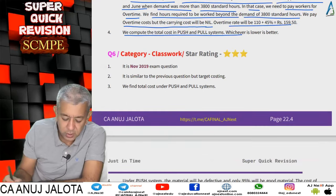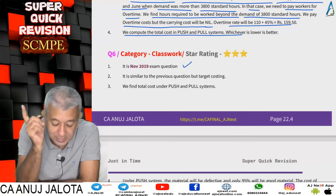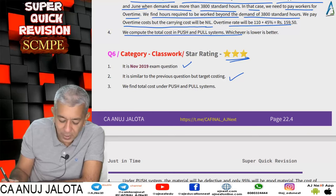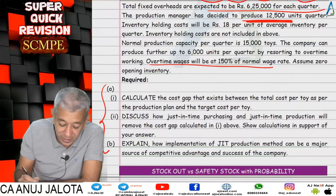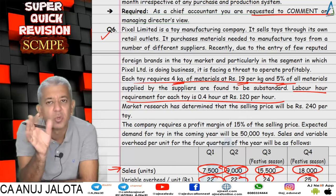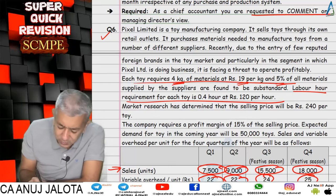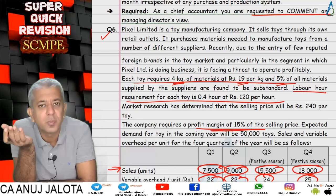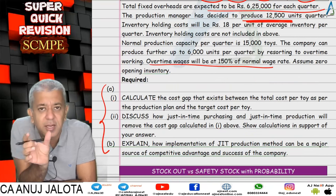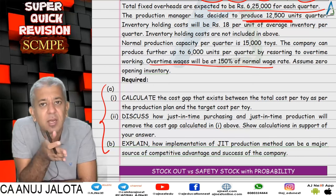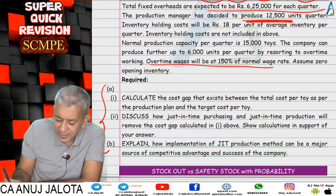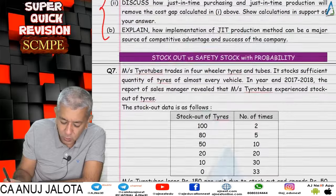This question is from the November 2019 examination — it is similar to the previous question, which is why it's rated three stars. It also involves target costing. From the target selling price, subtract the target profit margin to arrive at target cost. Under the current system, check whether targets are met; under JIT, check whether the target cost is achieved.